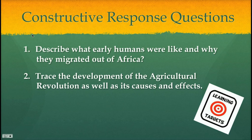With each one of these lectures, there's always going to be a question or two associated with it, and these questions will be test questions. Some people call them essential questions, some people call them free response questions — we call them constructive response questions. The two questions you're going to be able to answer after hearing today's lecture: the first one says, describe what early humans were like and why they migrated out of Africa. The second question says, trace the development of the agricultural revolution as well as its causes and effects. Since most of these lectures are broken up into two parts, you'll get the answer to question one in part one, and the answer to question two in part two.